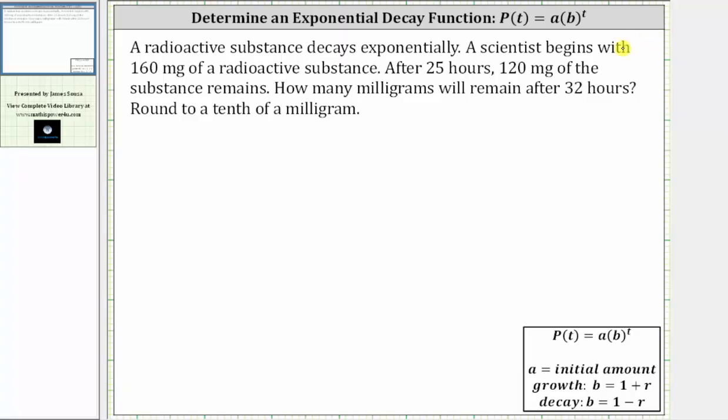A radioactive substance decays exponentially. A scientist begins with 160 milligrams of a radioactive substance. After 25 hours, 120 milligrams of the substance remains. How many milligrams will remain after 32 hours? Round to a tenth of a milligram.